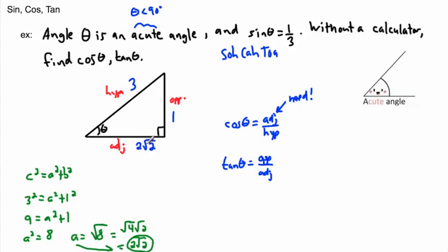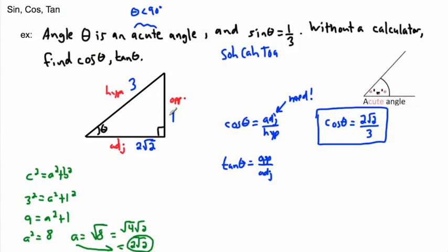You could also write √8 or calculate it on a calculator. Now we can find cos theta: cosine is adjacent over hypotenuse, so cos θ = 2√2 / 3. Notice they didn't ask for theta itself — just cos theta — so I didn't need to find the angle at all. That fraction is the complete answer.